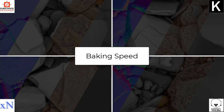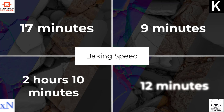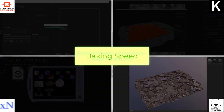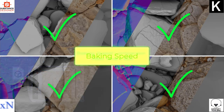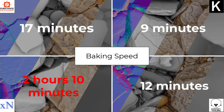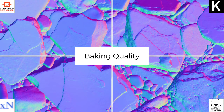Looking at baking times: Substance Designer took 17 minutes, Knalt 9 minutes, XNormal 2 hours and 10 minutes, and Marmoset Toolbag 3 about 12 minutes. With GPU acceleration on, Substance Designer drops to just 6 minutes. Overall baking speed was totally acceptable for all bakers except XNormal, which failed with the ambient occlusion map bake — the CUDA support that should speed up AO didn't work in this case.